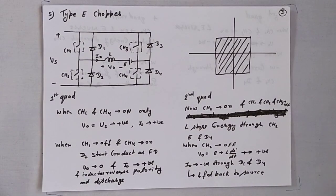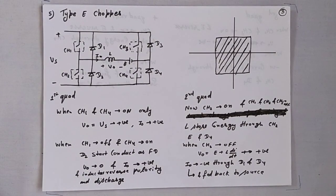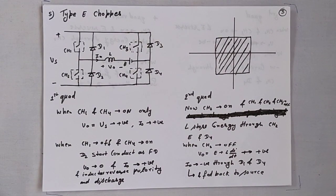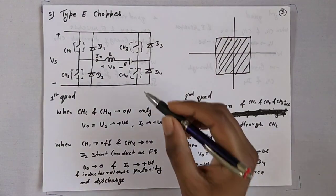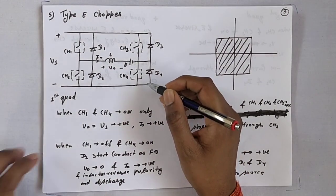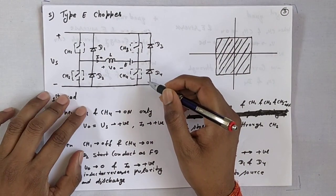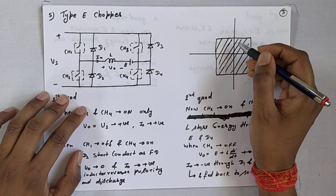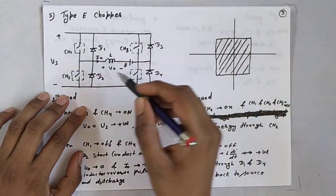Good morning everyone. Now we start with Type E chopper. This is the circuit diagram of Type E chopper. You can also say that this is the four-quadrant chopper.